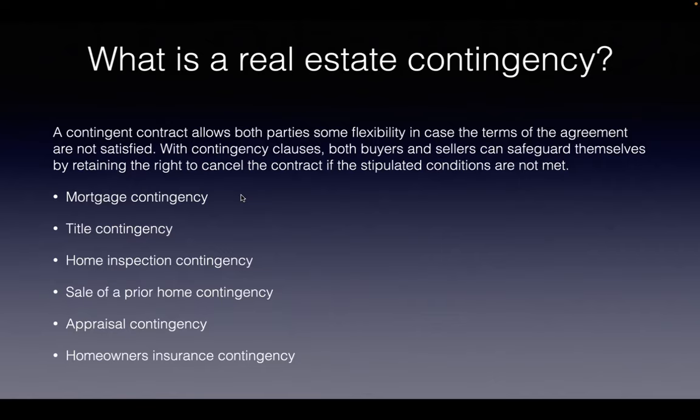If we send a written objection to the seller to terminate on or before our contingency date and deadline, the earnest money gets returned to the buyer. For example, if my home inspection is due tomorrow and I find a sewer issue, HVAC issue, or foundation crack, I send a written termination to the seller. The seller has to give me my earnest money back, the contract ends, and both parties return to a neutral position as if the contract never happened.